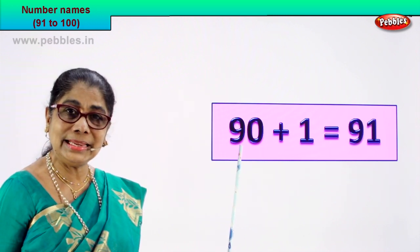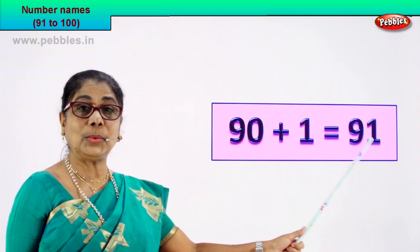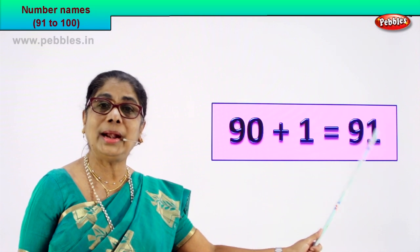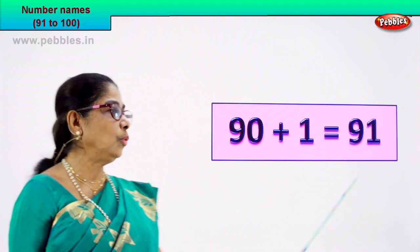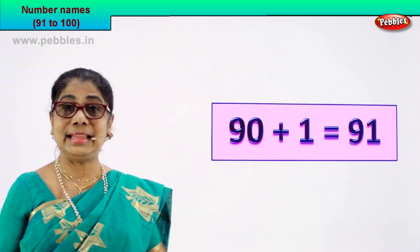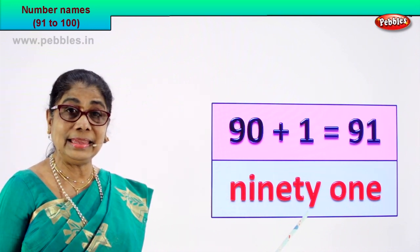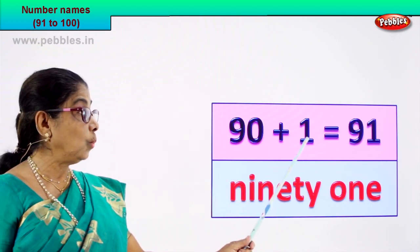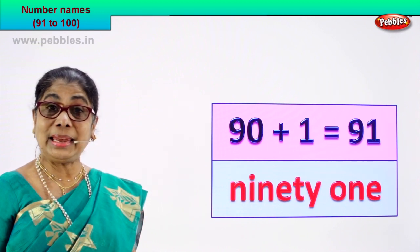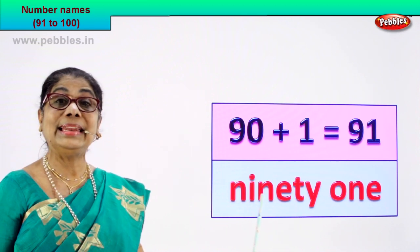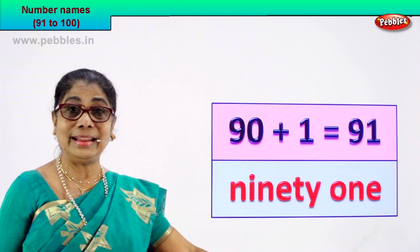Please read with me: 90 plus 1 is equal to 91. What is 91? 9 and 1 — 91. That's the numeral. Now what is the name of this numeral? 91 — how do we write the spelling of this name? Spell 90: N-I-N-E-T-Y. And 1: O-N-E. You have the numeral here and the number's name here. 91 — ninety-one. Very good!